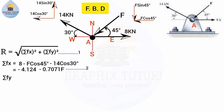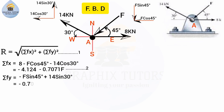For ΣFy, I focus only on vertical components. F sin 45 is acting downward, so it is negative: minus F sin 45. The 14 sin 30 is acting upward, so it is positive: plus 14 sin 30. Any force acting upward is positive; acting downward is negative. Since sin 45 equals 0.7071, we have minus 0.7071F. And 14 sin 30 equals 7, so plus 7. I'll call this equation three.